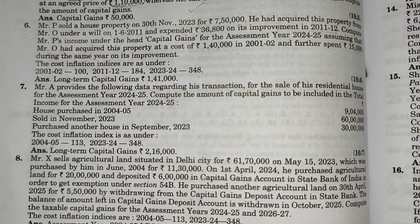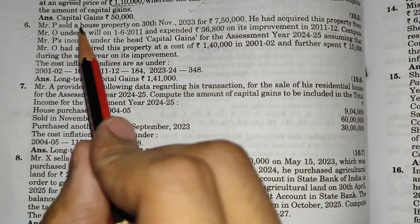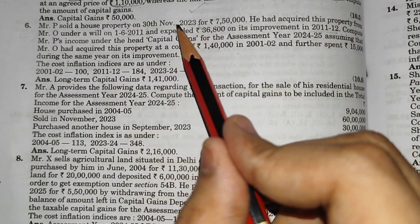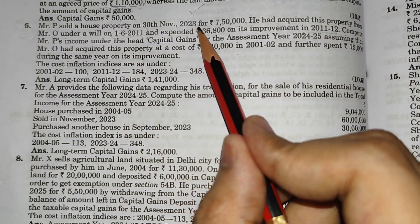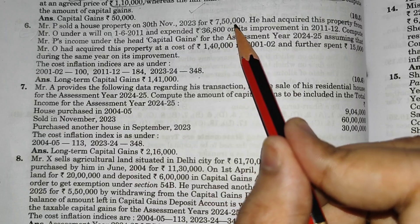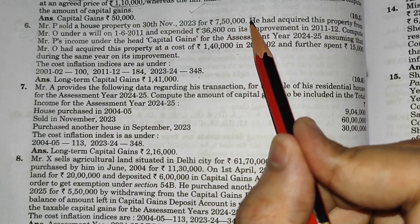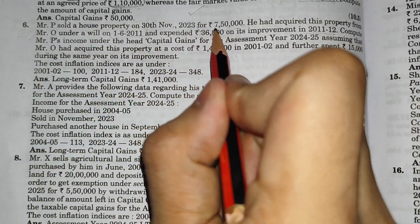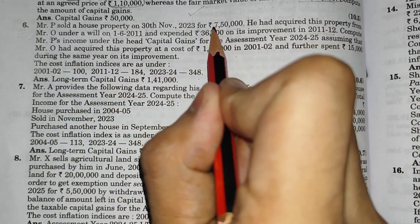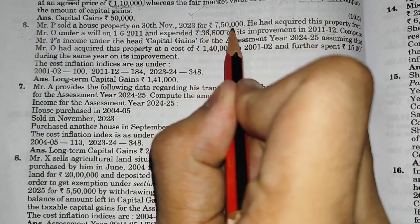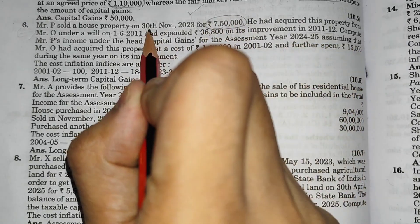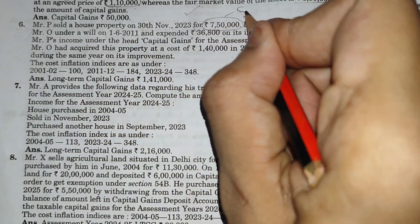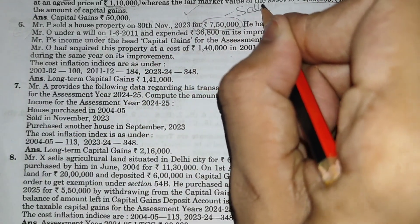Question 6, capital gains. Mr. P sold a house property on 30th November 2023 for Rs. 7,50,000. This is the sales price.